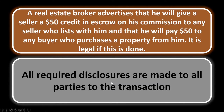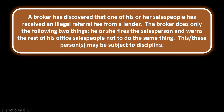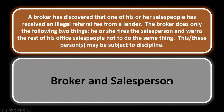Real estate practice number two: a broker discovers one of his salespeople received an illegal referral fee from a lender. The broker fires the salesperson and warns the rest of the office. Who may be subject to discipline? Both the broker and the salesperson. The salesperson did the illegal act, but the broker is responsible for supervision. Importantly, the broker must also inform the commissioner — simply firing the salesperson is not sufficient.